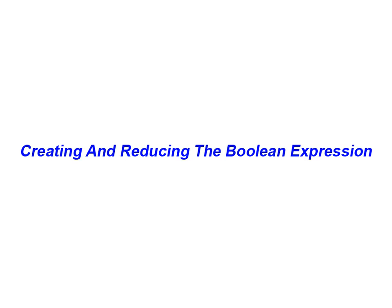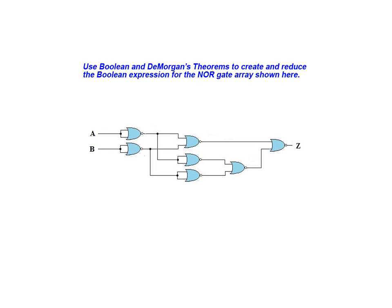In this animation we will examine the steps involved in creating and reducing a Boolean expression. In this example we will be using the Boolean and DeMorgan theorems to create and reduce the Boolean expression that represents the NOR gate array shown here.